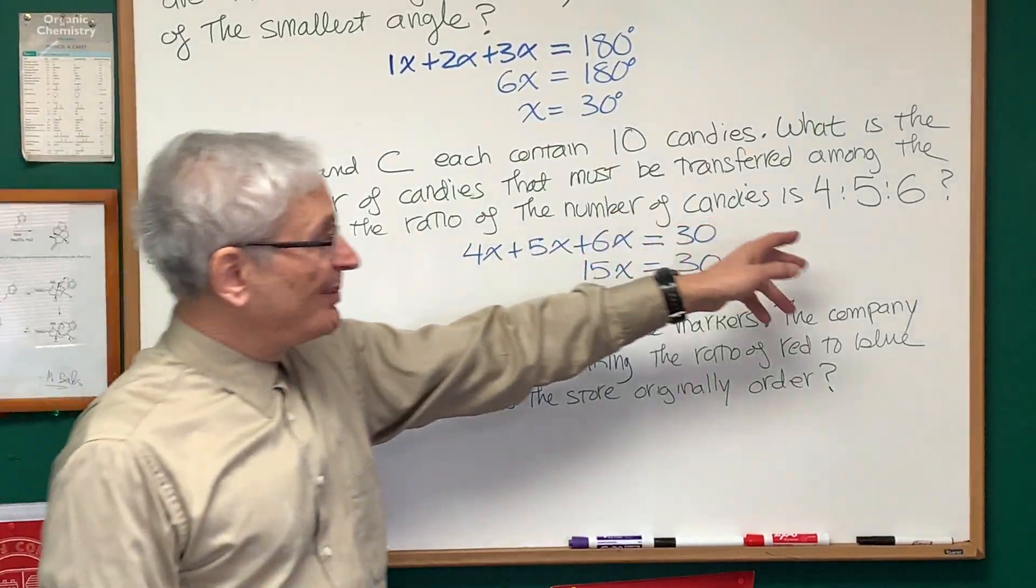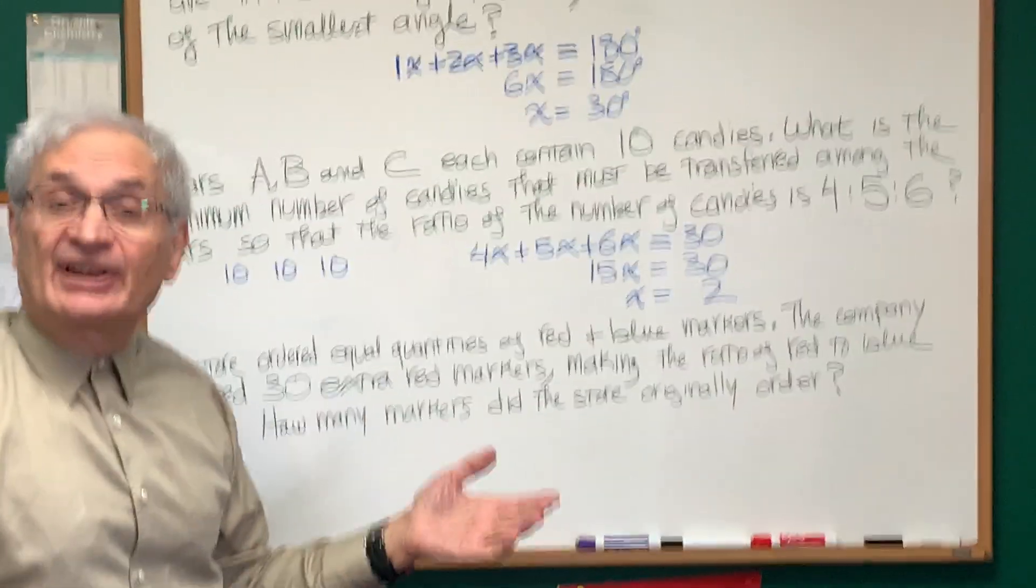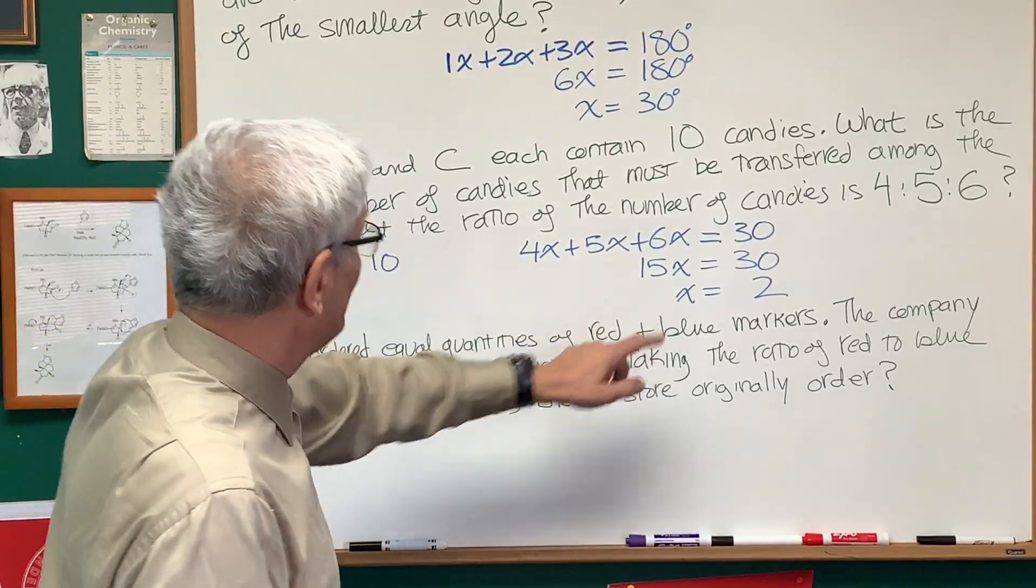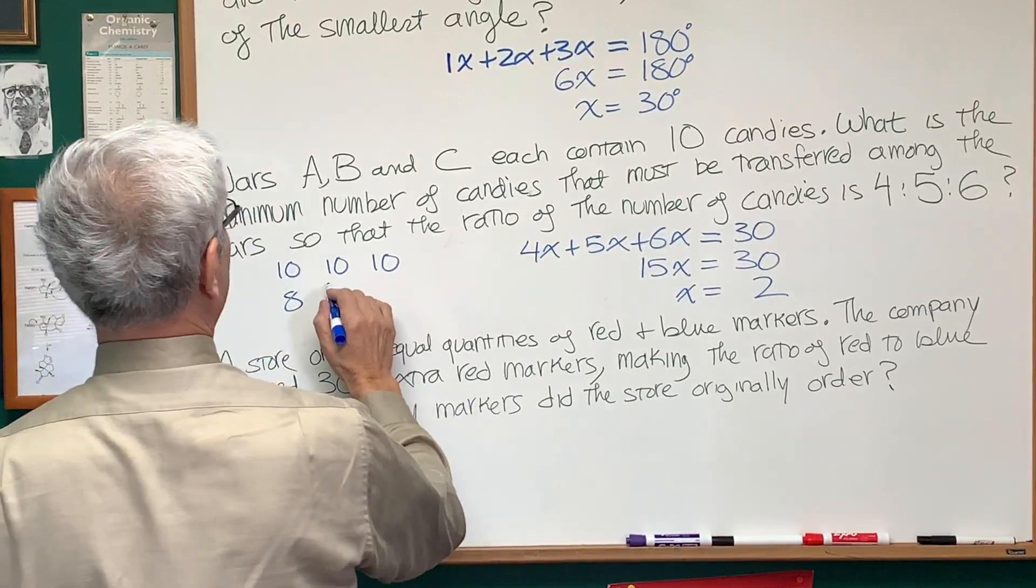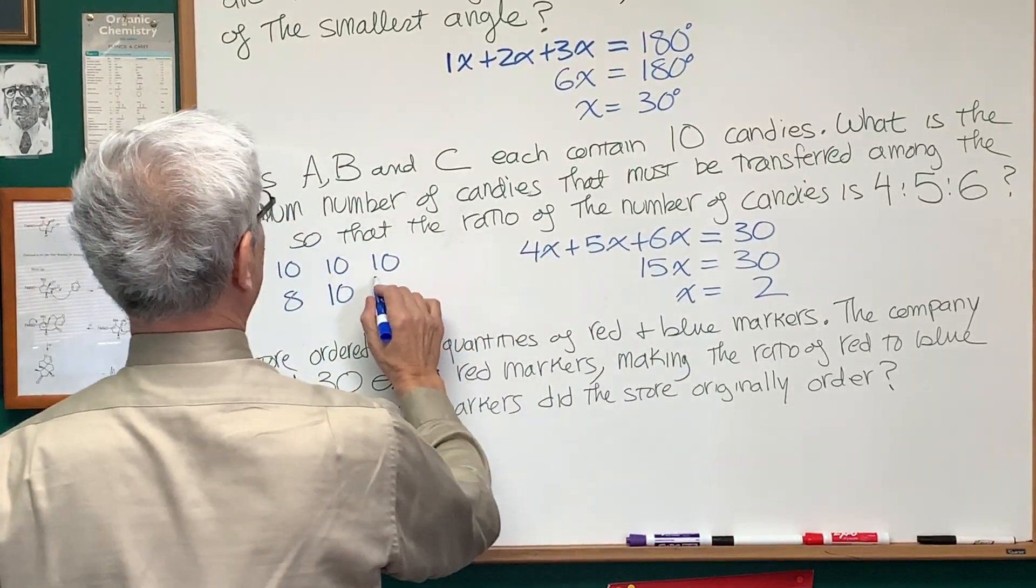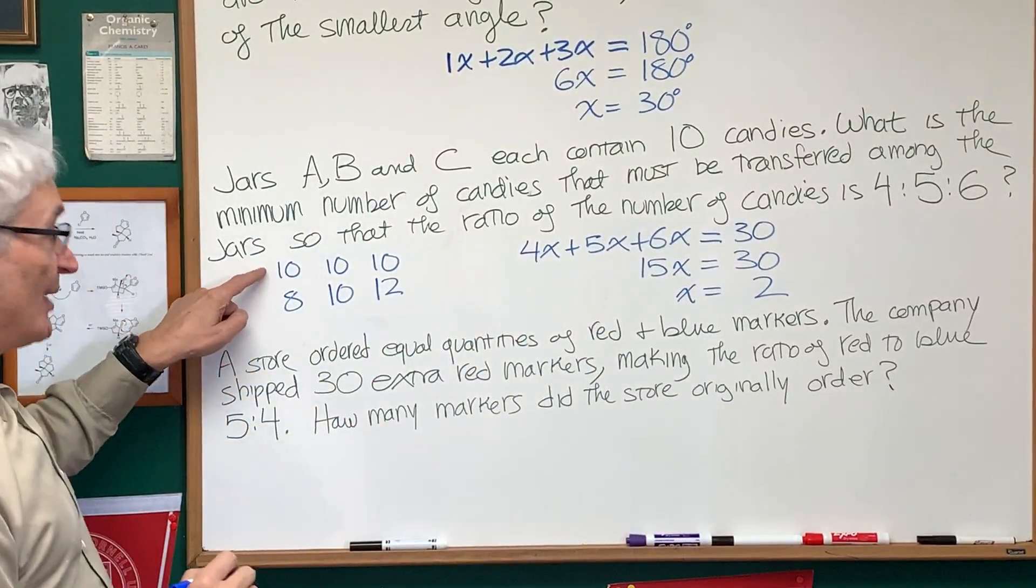So, if we want the proportion 4, 5, 6, how many candies do we need in each of the jars? Well, x is equal to 2, so this will have 4 times 2 is 8, 5 times 2 is 10, and 6 times 2 is 12. So we start out with 10, 10, 10.